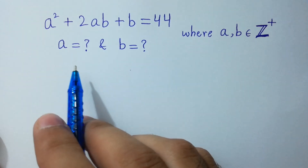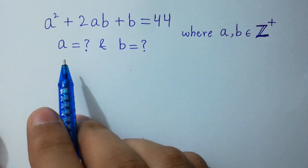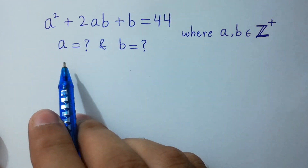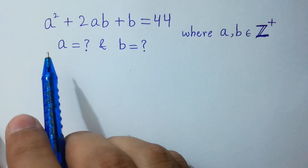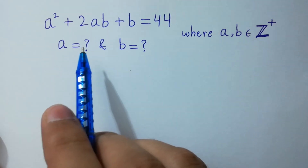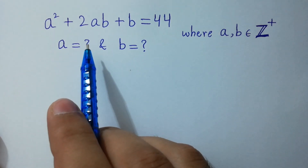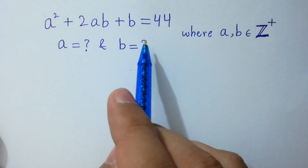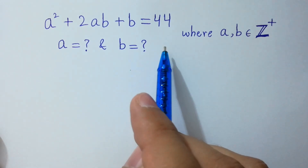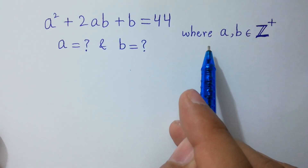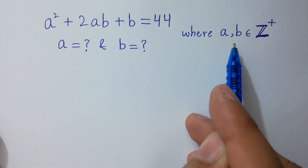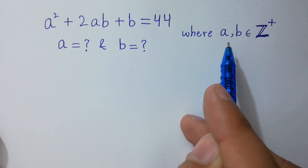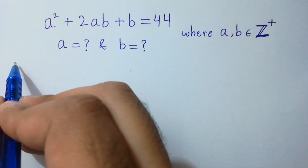Hello friends, find the value of a and b if a² + 2ab + b = 44 where a, b belongs to positive integers. Let's solve it.